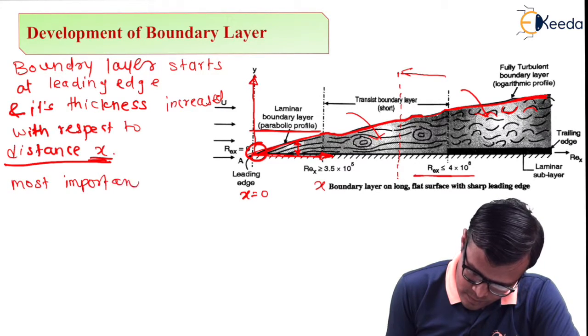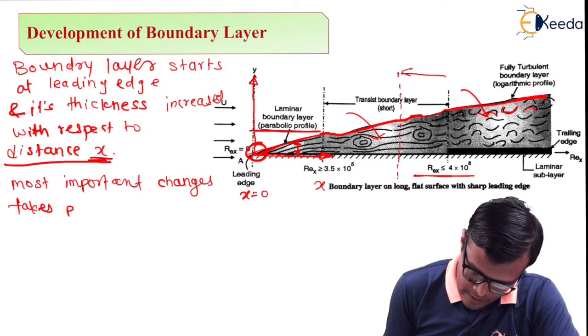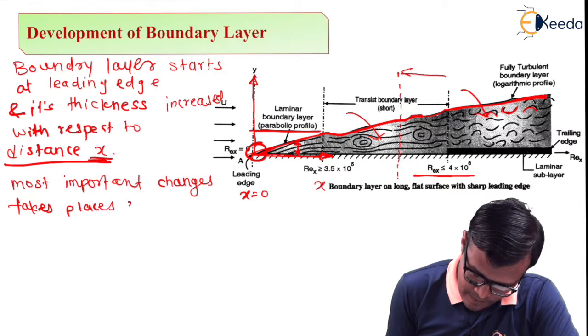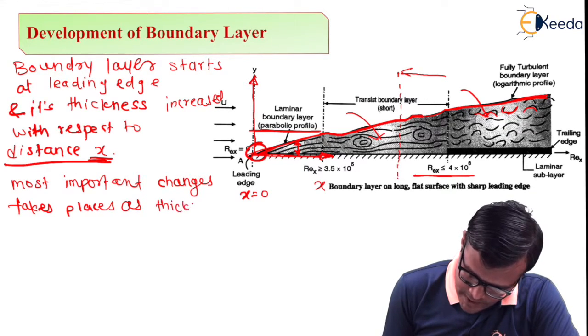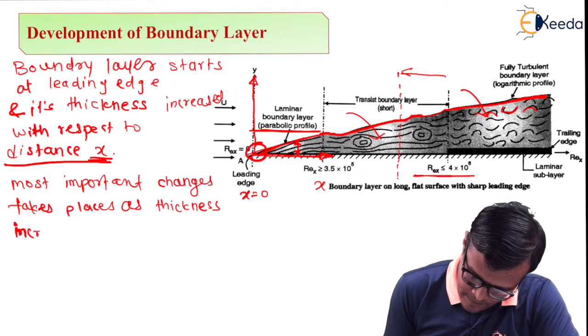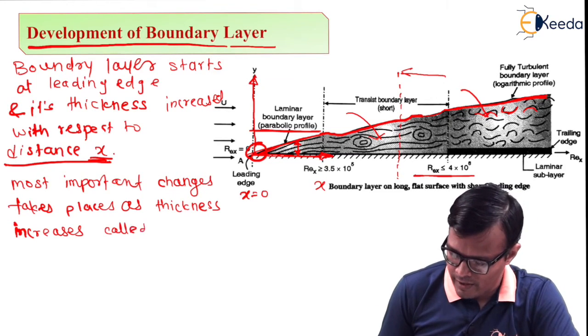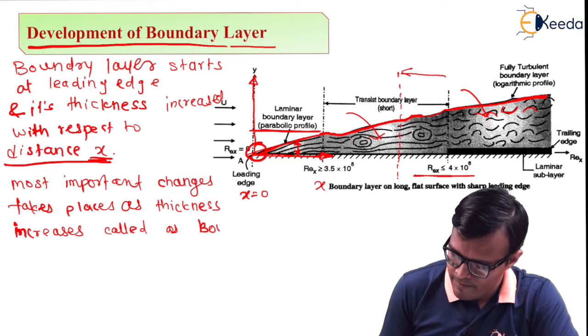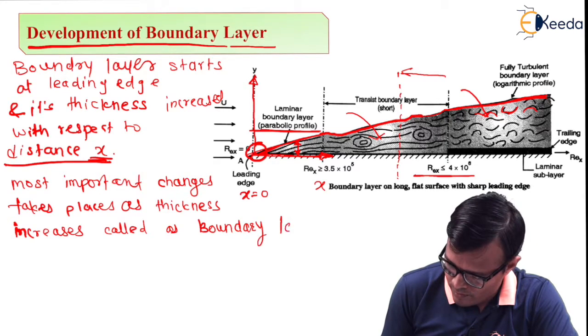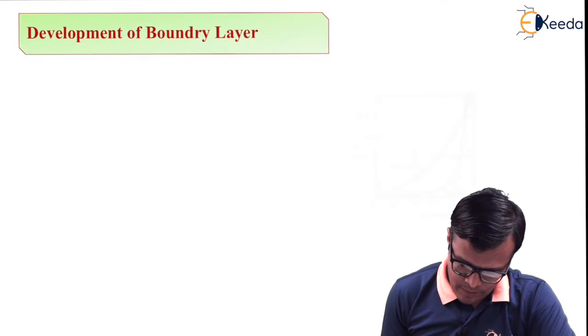So this is the reason. As x increases, thickness increases, and this process is called the development of boundary layer.